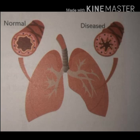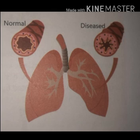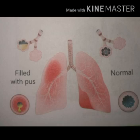Asthma is treated using an inhaler. Asthma can be prevented by avoiding exposure — exposure meaning uncovering — to substances that trigger its attack. Triggers means to speed up. So asthma can be prevented by avoiding exposure to substances that speed up its attack.